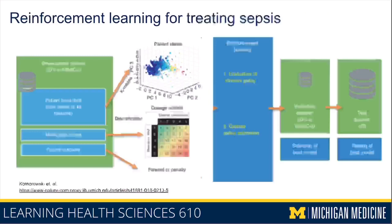This is a paper by Komarowski and colleagues published in Nature, looking at predicting the right course of action for sepsis. They used the MIMIC-3 dataset, developed their model on 80% of the data, and looked at medication doses including the dose of blood pressure-raising medicines and IV fluids. They used this to estimate an optimal policy or optimal course of action for each patient, then compared this against what clinicians actually did to determine which strategy worked better.